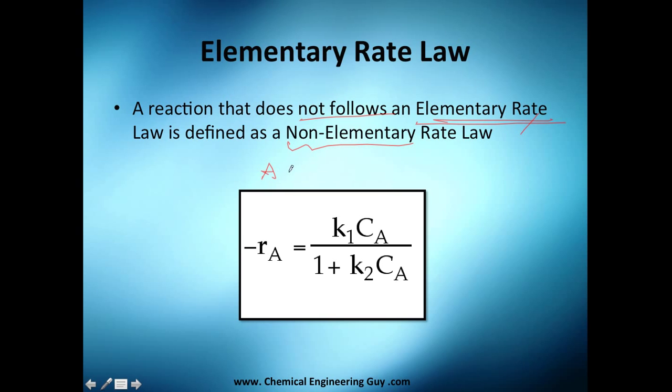For example, if we got, I don't know, A turns out to B, or reacts to form B, and you'll probably want to model this as this here, which makes sense if I were to tell you that this is an elementary rate law. But this is not the case because this does not follow an elementary rate law. It's a non-elementary rate law.